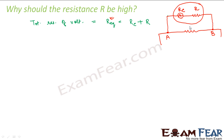Now when the net resistance of the circuit changes, the overall current through the circuit also changes, because resistance opposes the flow of current. When the resistance is more, the current will be less; when the resistance is less, the current will be more. That means if the resistance of a circuit changes, the current flowing through the circuit will also change. So in this case, when this resistance R is introduced, the resistance changes, and therefore the overall current also changes.